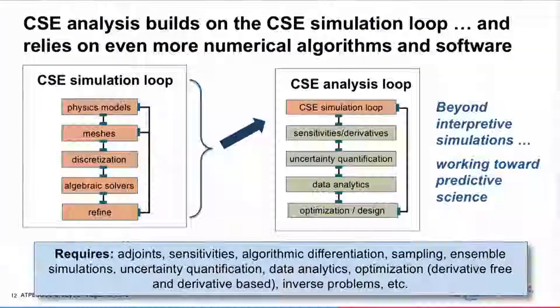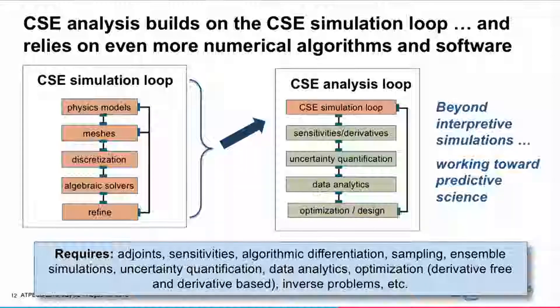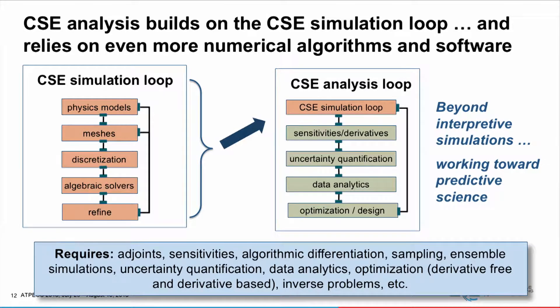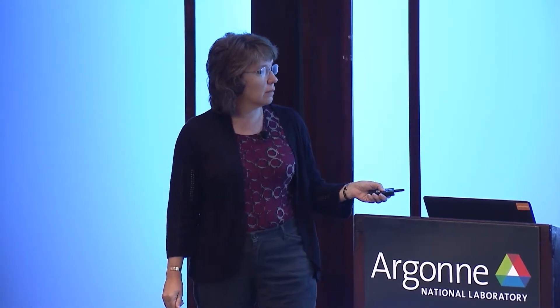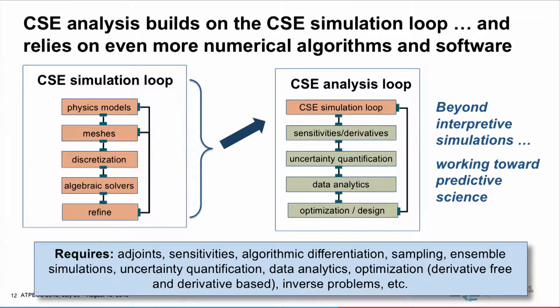You can take that single simulation loop focused on a forward model and embed it in a bigger analysis loop where you can start turning more toward predicting what's going on in the world around you — doing uncertainty quantification, understanding the error in the model and simulation process, doing optimization and design, for example running a number of simulations to figure out the best airfoil design for an airplane. This requires a whole other set of numerical algorithms ranging from adjoints and sensitivities to ensemble simulations — how are you going to run and coordinate them, how are you going to sample, which parameters to run? Numerical libraries and software can help with all of that.